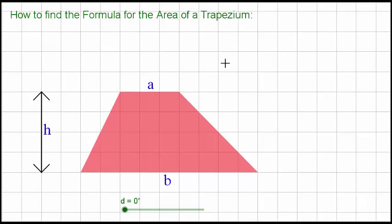Here you can see we have a trapezium, which is a four-sided shape, a quadrilateral with one pair of parallel sides. In this case, the parallel sides we've labeled a is the top one and b is the bottom one.